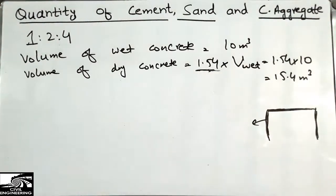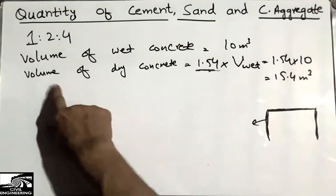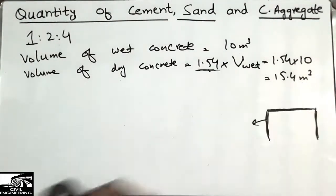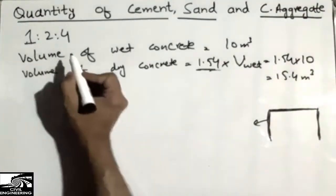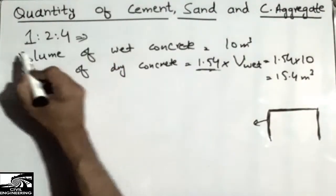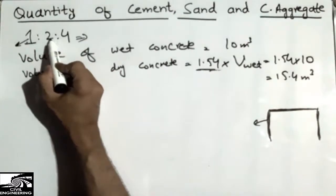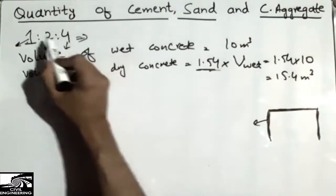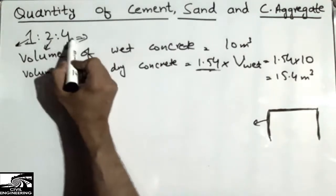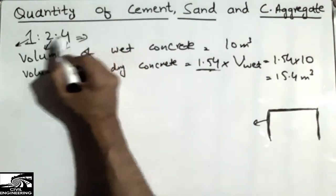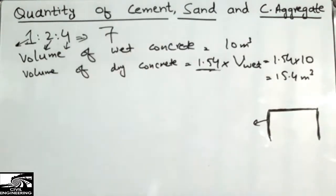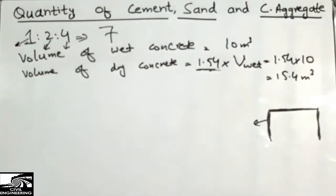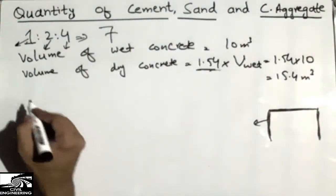The dry concrete volume is 15.4 cubic meters. Now we sum the mix ratios: cement is 1, fine aggregate (sand) is 2, and coarse aggregate is 4. Adding them: 1 + 2 + 4 = 7. This total ratio of 7 will be needed in further calculations.